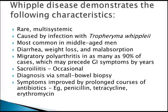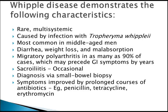Whipple's disease is a multisystemic condition caused by infection with Tropheryma whipplei, most common in middle-aged men. Patients present with weight loss, malabsorption, and migratory polyarthritis in as many as 90% of cases, which may precede GI symptoms by years. Sacroiliitis may also occur. Diagnosis is via small bowel biopsy, and symptoms improve with a prolonged course of antibiotics such as penicillin, tetracycline, or erythromycin.